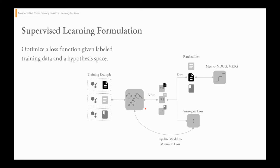However, to learn this function, we also need to optimize a loss function. But because ranking metrics are typically piecewise constant, we use a differentiable surrogate loss and optimize that loss to learn our scoring function.